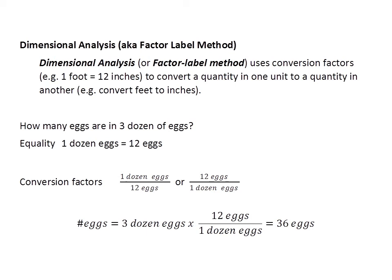Dimensional analysis uses conversion factors to convert a quantity in one unit to a quantity in another unit. For example, if I was converting feet to inches, I would make use of the conversion factor 12 inches divided by 1 foot, because I know that 1 foot is equal to 12 inches.